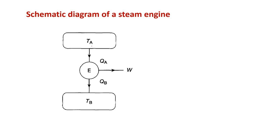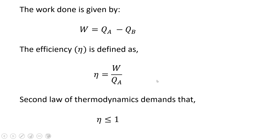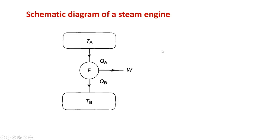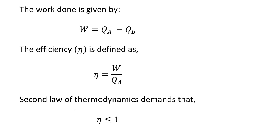The engine E draws heat Q_a from the bath maintained at T_a and rejects heat Q_b into another bath at T_b. The work done is given by Q_a minus Q_b, that is the difference in heat. So Q_a and Q_b are respectively the heat taken from the bath at T_a and rejected to the bath at T_b.